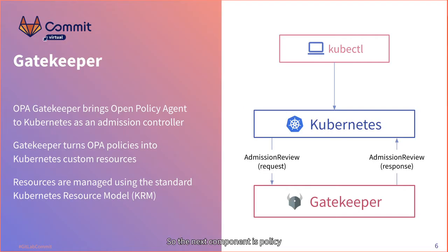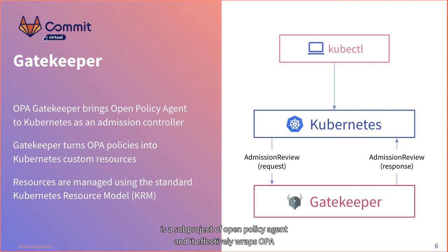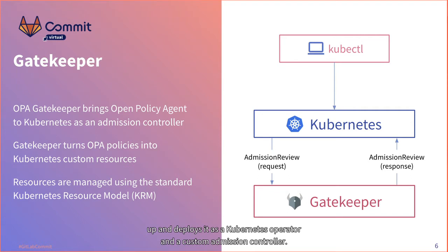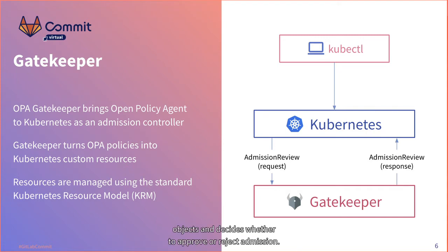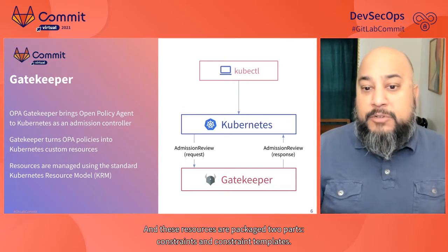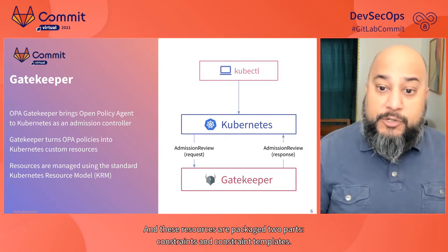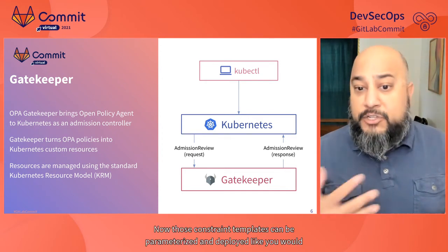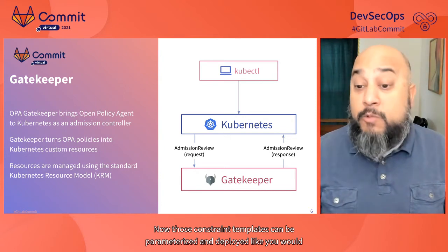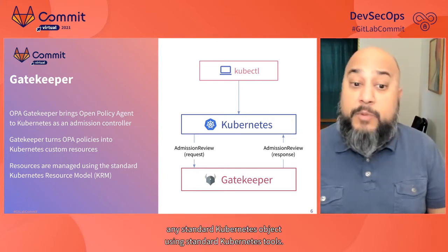The next component is policy enforcement using Gatekeeper. Gatekeeper is a subproject of Open Policy Agent, and it effectively wraps OPA and deploys it as a Kubernetes operator and a custom admission controller. The admission controller reads incoming objects and decides whether to approve or reject admission. Gatekeeper also provides the necessary bits so that you can package OPA policies as Kubernetes custom resources, and these resources are packaged as two parts: constraints and constraint templates. Those constraint templates can be parameterized and deployed like any standard Kubernetes object using standard Kubernetes tools.